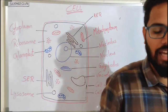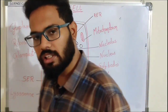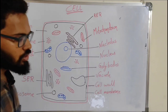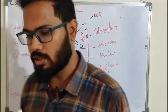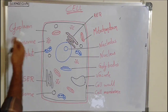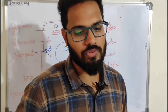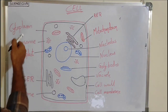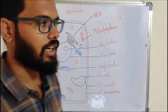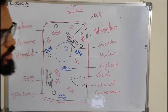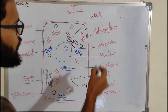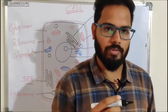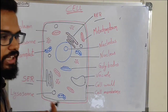The nucleus contains genetic material like RNA and DNA. Mitochondria are used for respiration. Chloroplast is used for photosynthesis — food preparation. Ribosomes are used for protein synthesis. Cytoplasm contains all organelles and acts as the house for organelles. There are two types of endoplasmic reticulum: rough endoplasmic reticulum, which contains ribosomes, and smooth endoplasmic reticulum, which has no ribosomes.